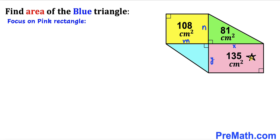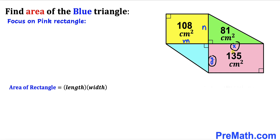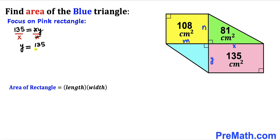Focusing on the pink rectangle and recalling the area formula — area equals length times width — our length and width are x and y, and the area is 135. So: 135 = x · y. Dividing both sides by x gives y = 135/x. We replace y with 135/x, so this side length is now 135/x.